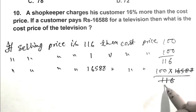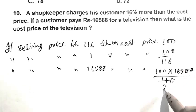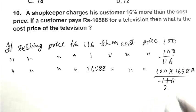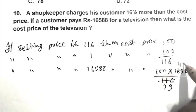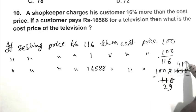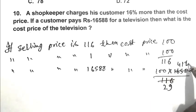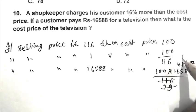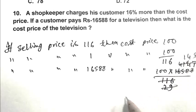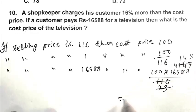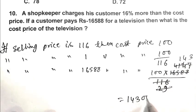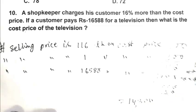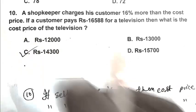Calculating: 100 multiplied by 16,588 divided by 116 equals 14,300. C is the right answer.